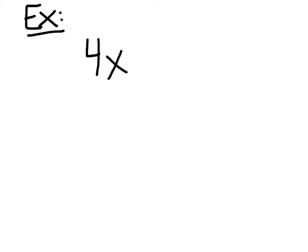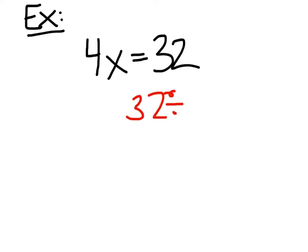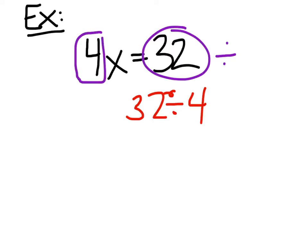So last time we were solving problems like this: four X equals thirty-two. What is the value of X? Eight, right? How would you solve this? Yes, Caleb? Thirty-two divided by four. There you go — take thirty-two divided by four. All you're doing is taking the constant and dividing it by the coefficient. Well, today is no different.